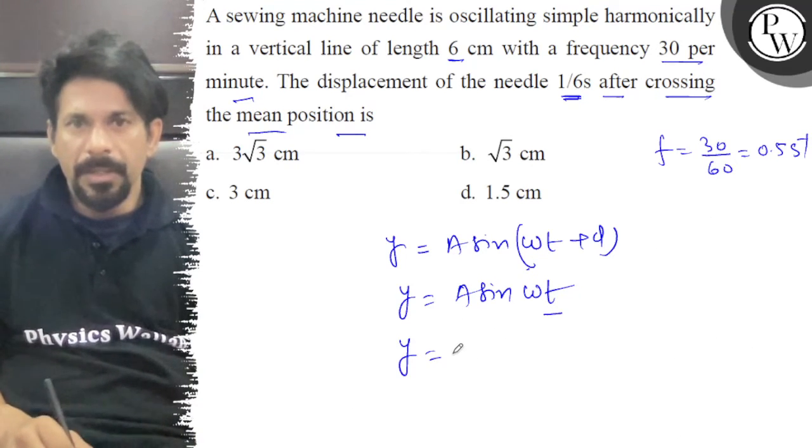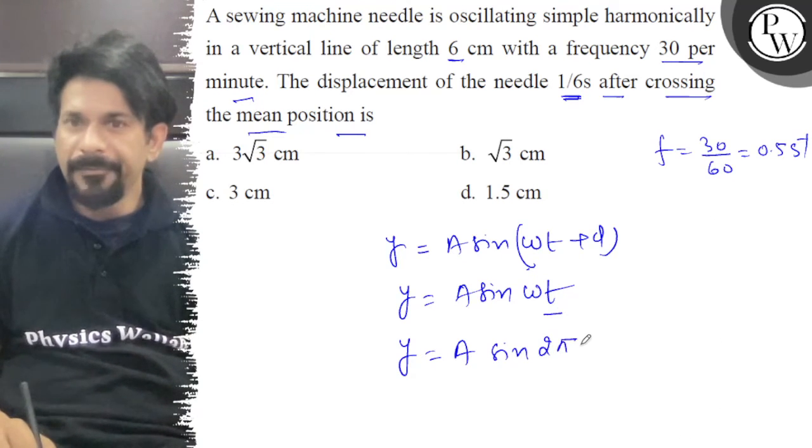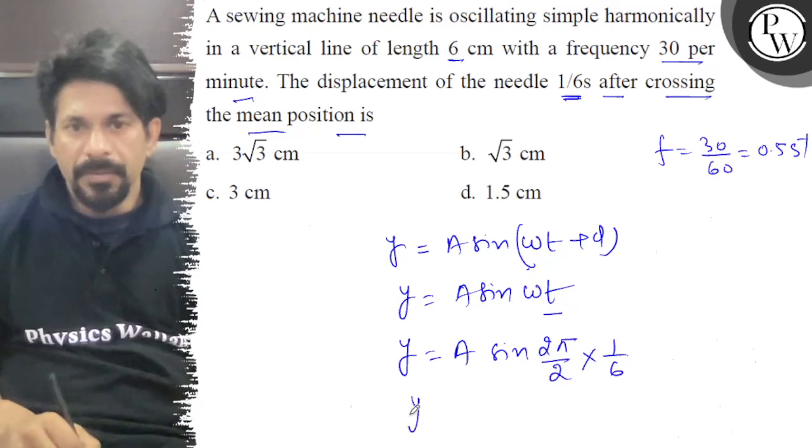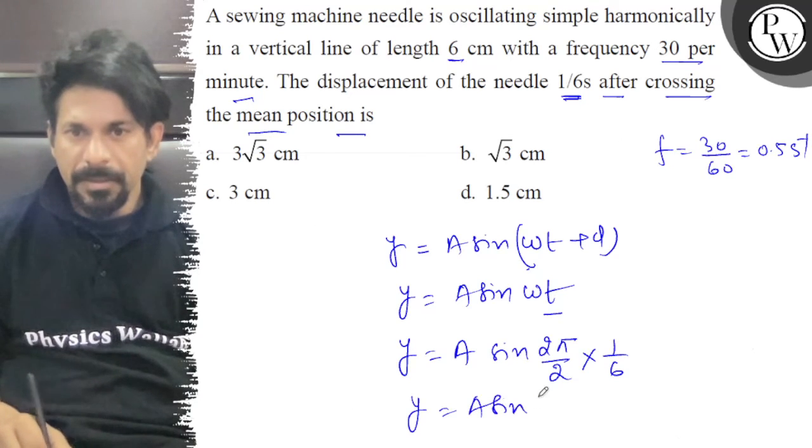So, y is equal to a into sin 2 pi by capital T, yeah, 2 pi f. F is 0.5 which is 1 by 2, into t which is 1 by 6. So, y is equal to a sin pi by 6.